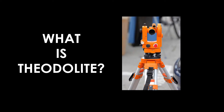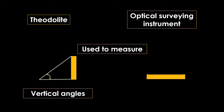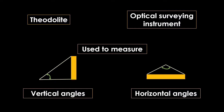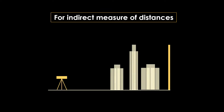What is a theodolite? A theodolite is an optical surveying instrument that is used to measure vertical angles and horizontal angles. It is also used for indirect measurement of distances.